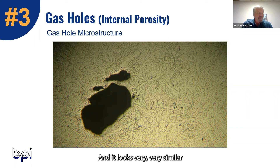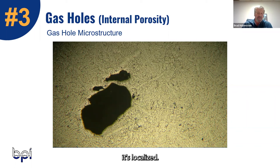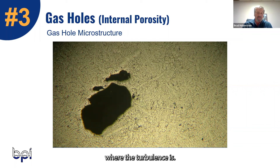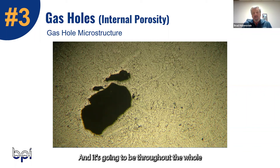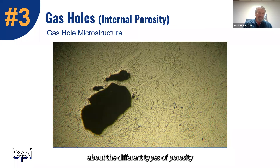It looks very similar to hydrogen porosity, which we'll talk about later. But the key is, as Ernie just said, it's localized — it's going to be in the area where the turbulence is. If it's hydrogen, it's something in the melt that's going to be throughout the whole casting. You're not going to be able to fix an issue unless you can identify it. That's why we're talking about the different types of porosity and their different characteristics.